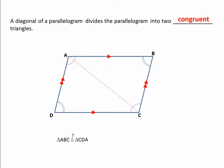A diagonal of a parallelogram divides it into two congruent triangles. We know AC is congruent to AC, AD is congruent to BC, and DC is congruent to AB. So by Side-Side-Side, we know that these triangles are going to be congruent.